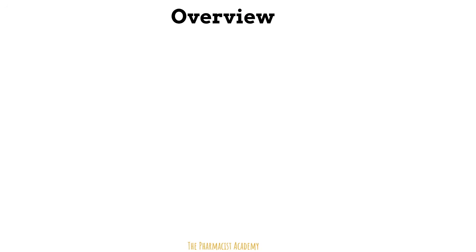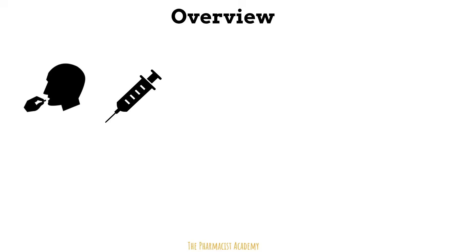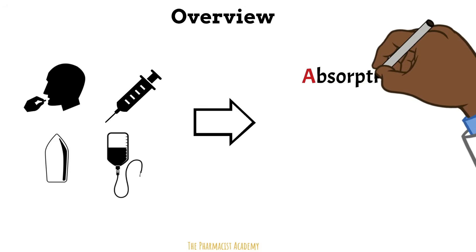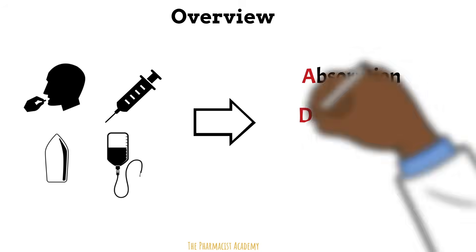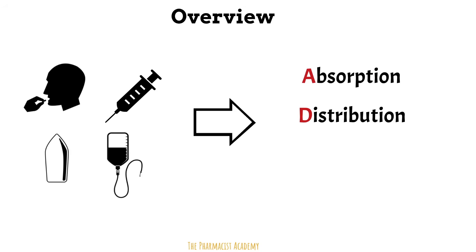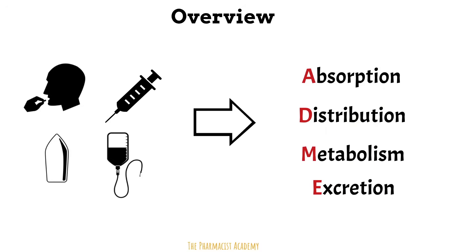As we know, drugs can enter the body through several ways. It doesn't matter if the medication is given by mouth, injectable, or suppository — there will be some kind of absorption. This does not apply to intravenous medications since they are given directly into the blood. After any medication enters the body, it has to get distributed into the cells at the site of action. It needs to be metabolized and then excreted.